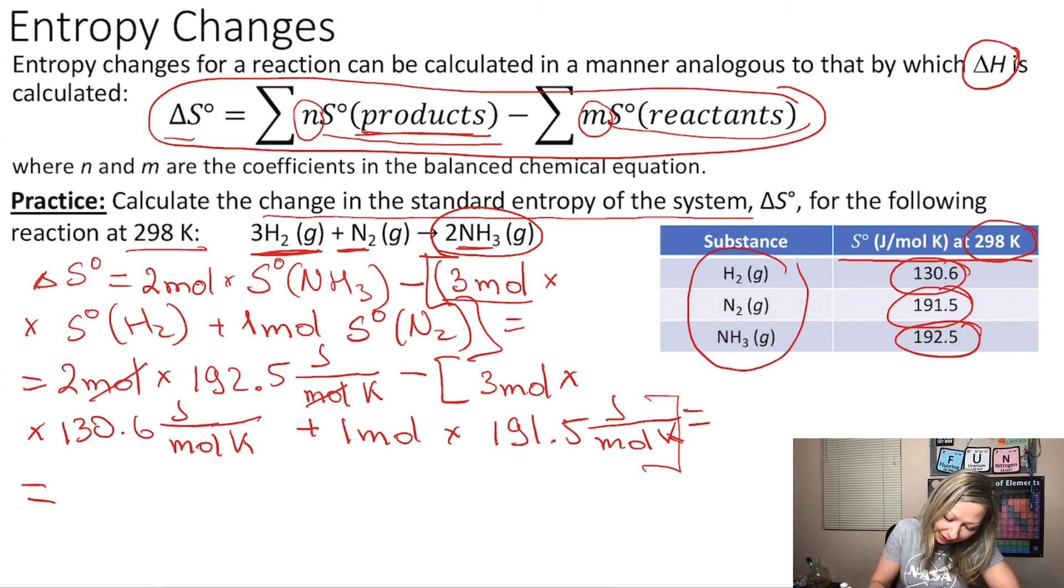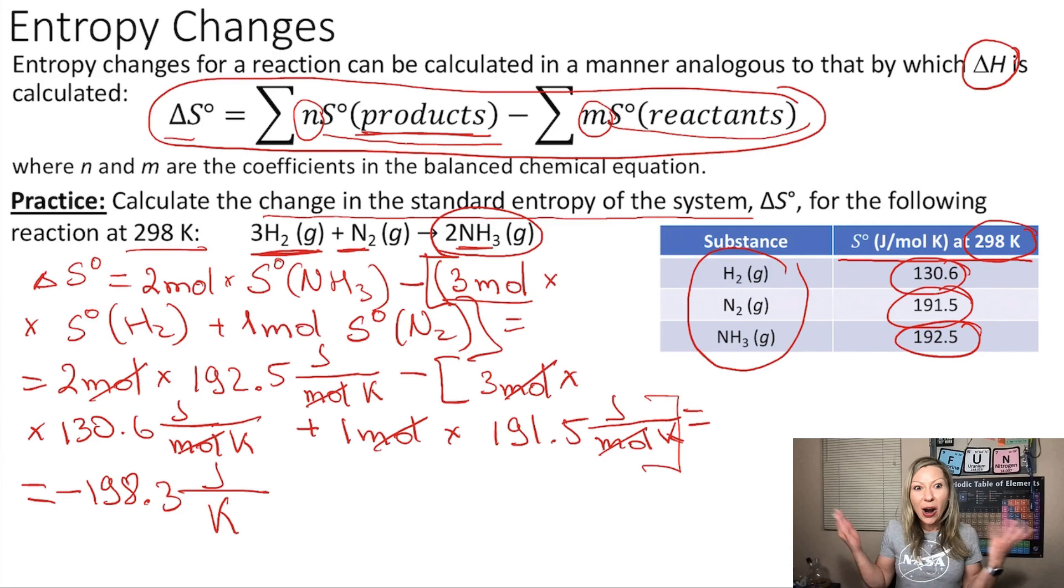So the moles will cancel out here again. So our final unit is going to be joule per Kelvin. And if you do this calculation, you are going to end up with minus 198.3.